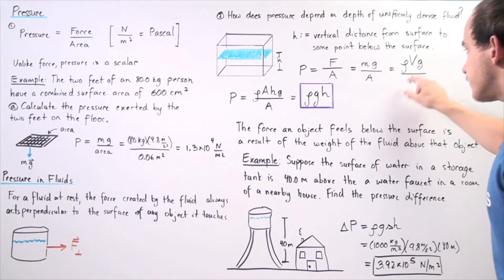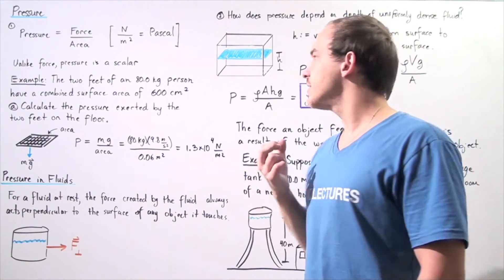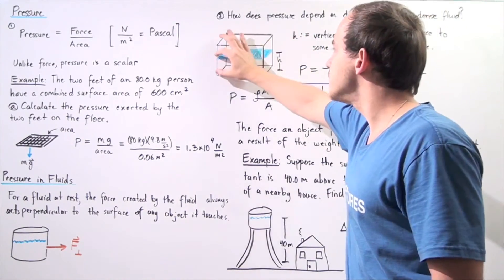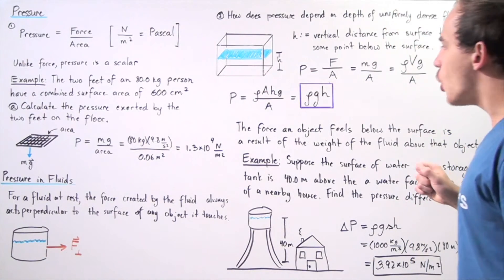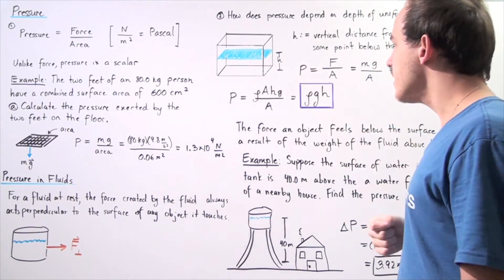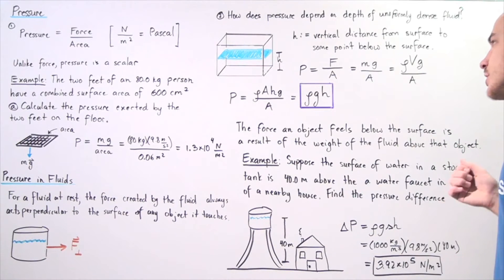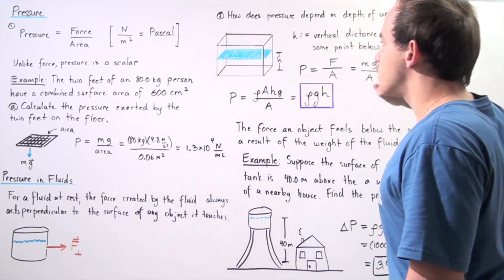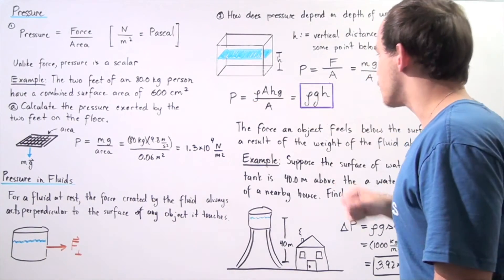We divide by the area. Volume equals the surface area multiplied by the height — the surface area of the bottom of our container multiplied by the height gives us the volume of the region the fluid takes up. We replace volume with area times height. Area appears in both the numerator and the denominator, so when we cancel the areas, we see that pressure equals the product of the density of the fluid, the gravitational constant g, and the height h from the surface down to the point we're considering.